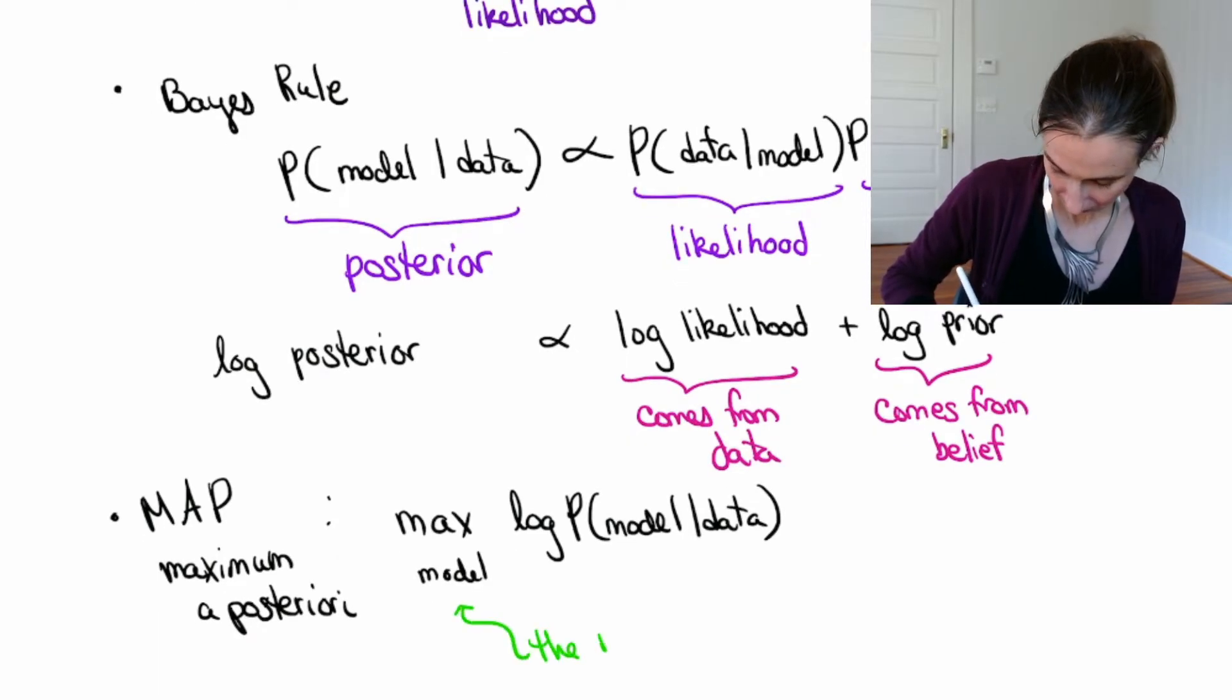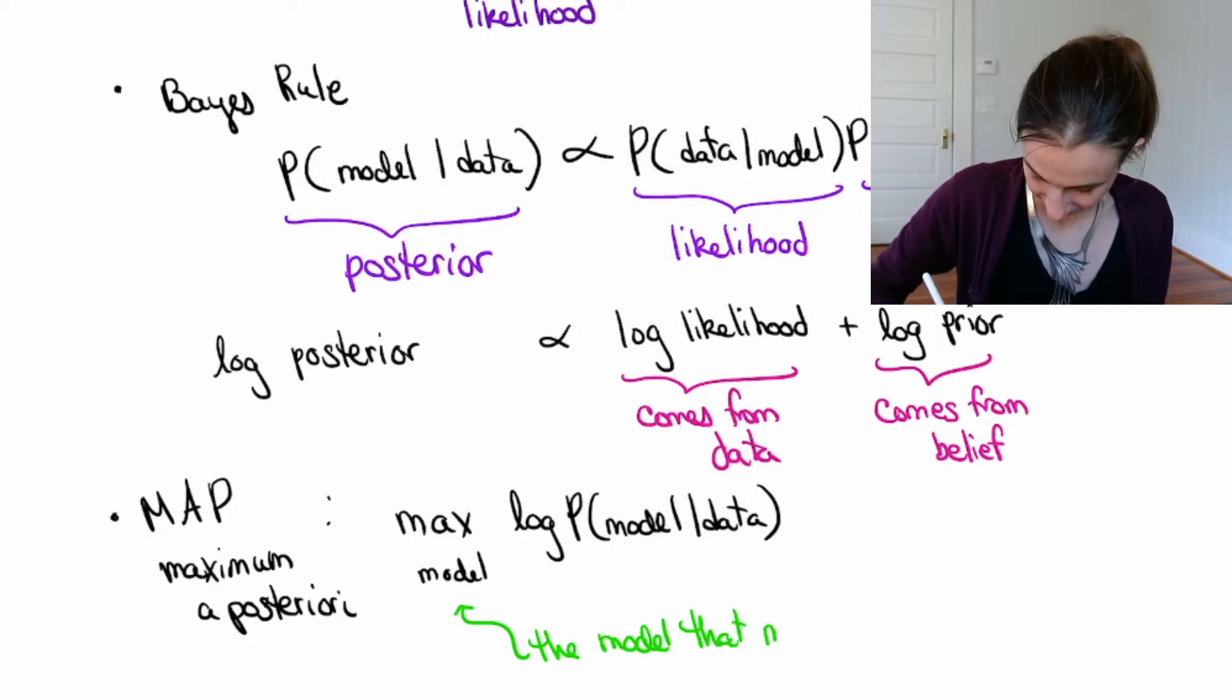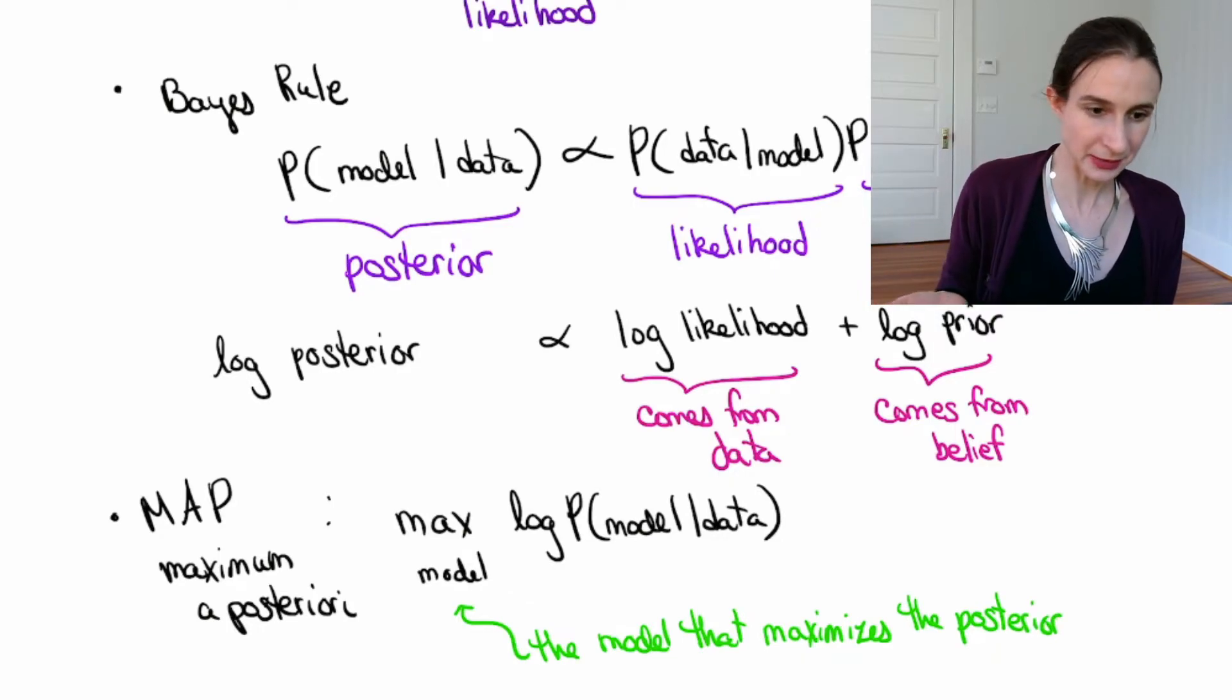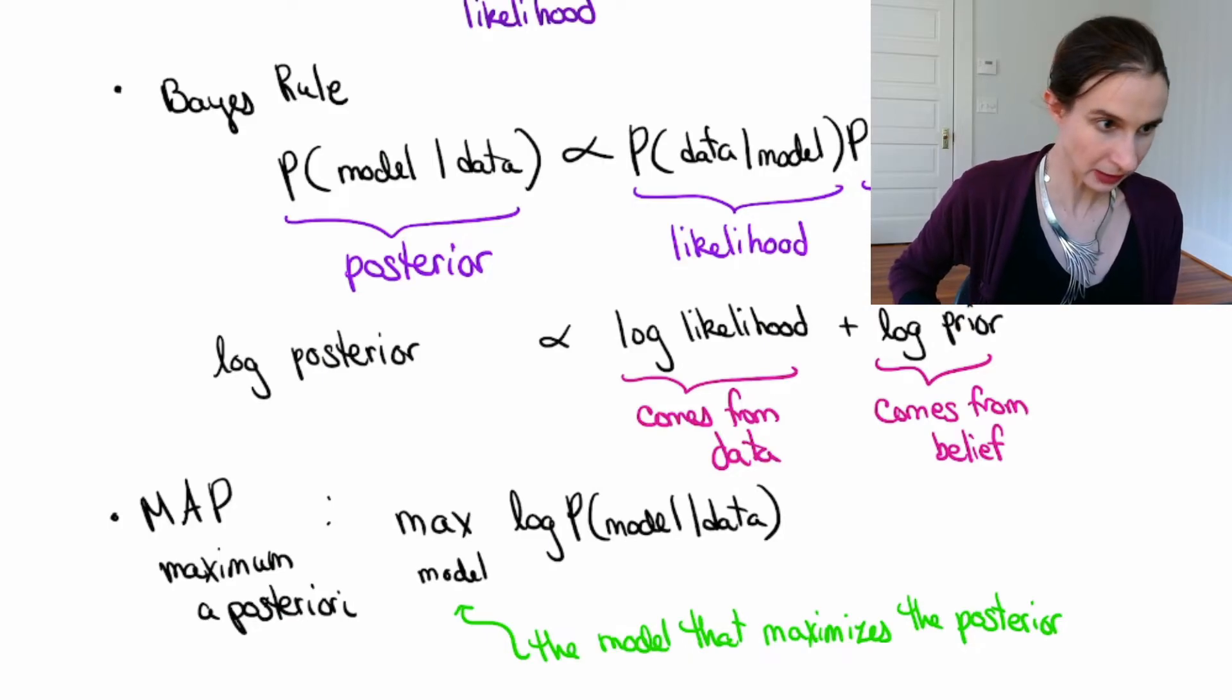So it's the model that maximizes the posterior. It agrees both with the data and with our prior beliefs. So let's write down the MAP model in terms of the likelihood term and the prior term.